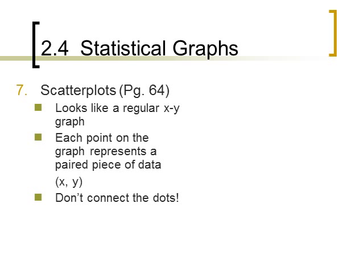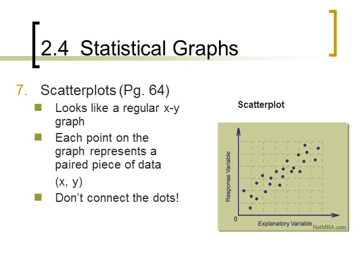The last type of statistical graph I wanted to mention is a scatter plot. And we will do a lot more with scatter plots in chapter 10, but in this chapter we just need to understand how to graph the points. It's basically plotting points on a regular x and y graph. Each point on the graph represents a paired piece of data. However, we don't connect the dots. So we're just scattering the points in the quadrant without connecting them. And on page 64 in your textbook you'll see some great pictures of scatter plots.